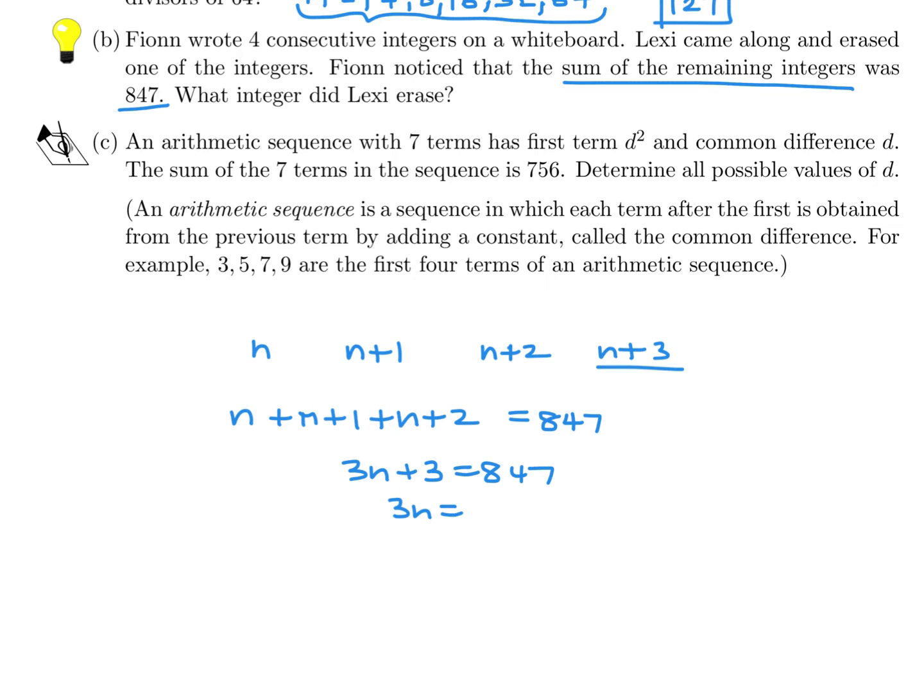This would be 3n + 3 = 847. So 3n = 844, and therefore n = 281.3. That's a problem because these are integers. Since n is not an integer, this assumption was incorrect. I got to keep going here.